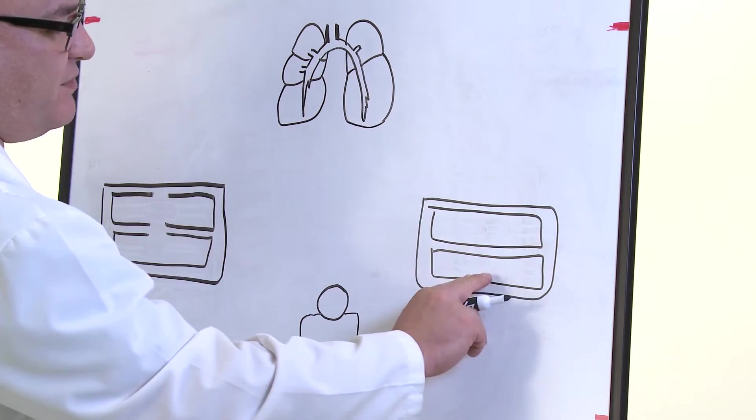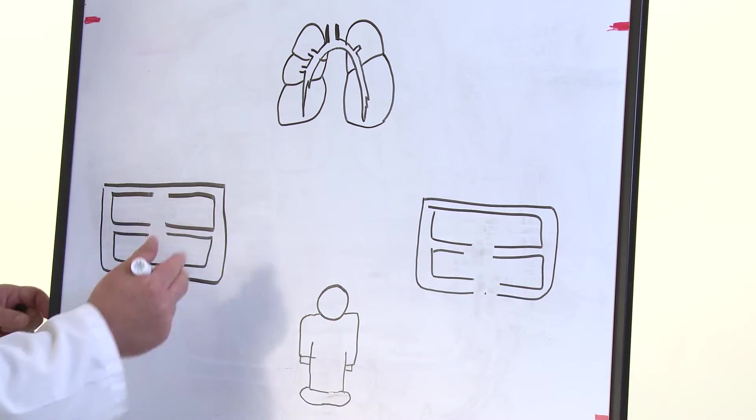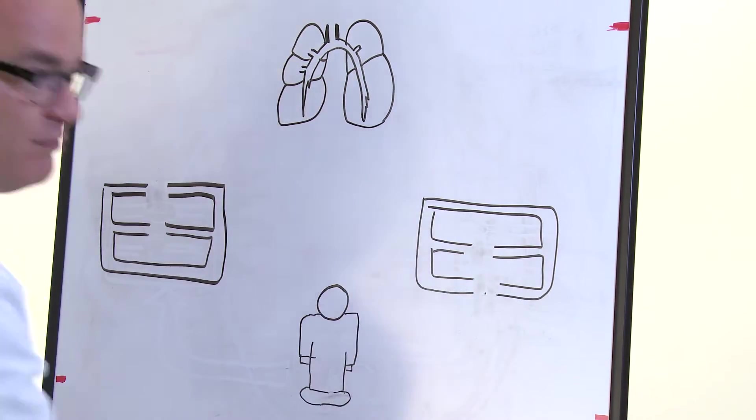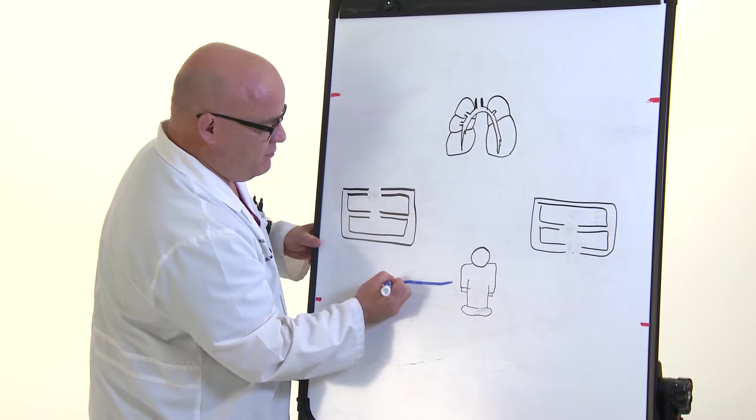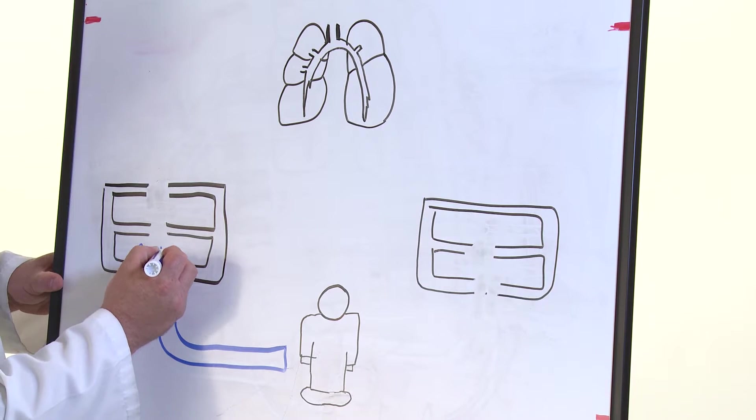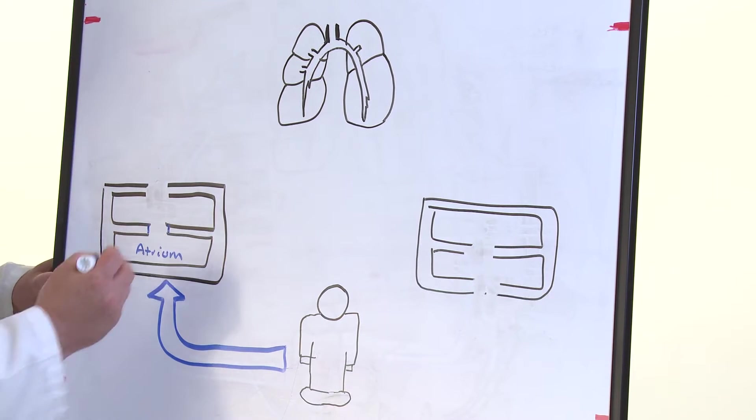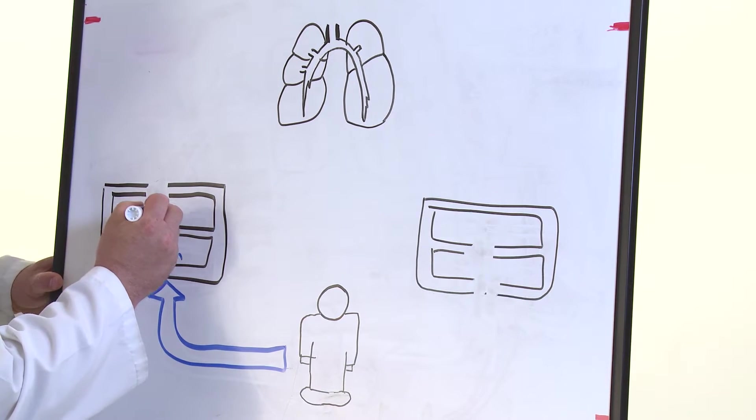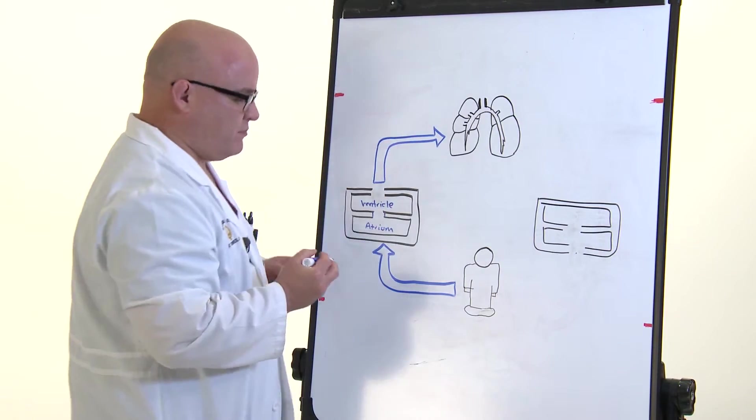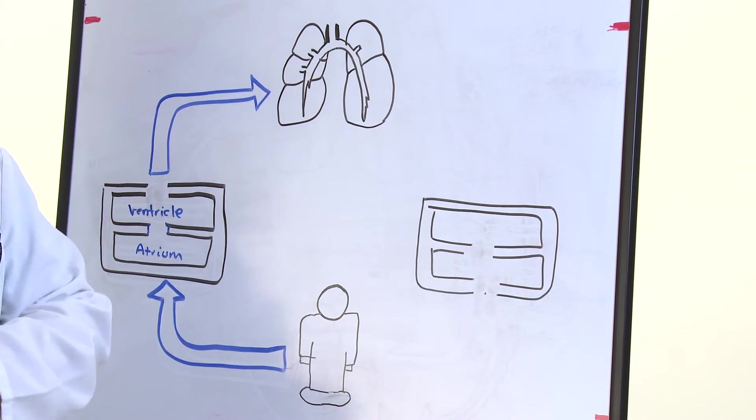Normally what occurs is blood, which is lacking in oxygen and nutrients, goes from your body to the right atrium. Here it crosses the tricuspid valve into the right ventricle. And from here, this oxygen-poor blood is sent to the lungs.